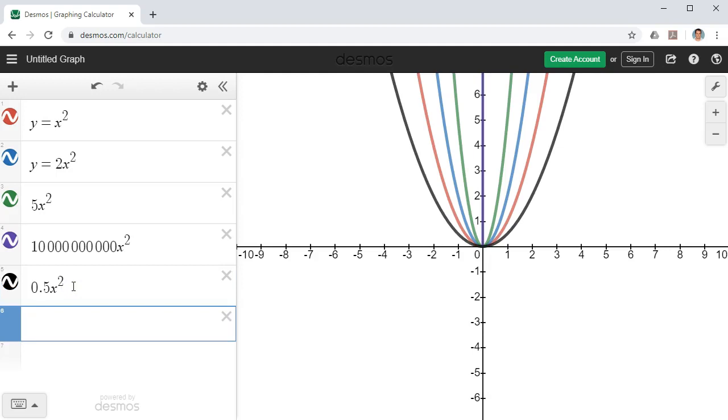Let's try an even smaller decimal, something even closer to 0. 0.1x to the power of 2. And you can see it's become much wider now.